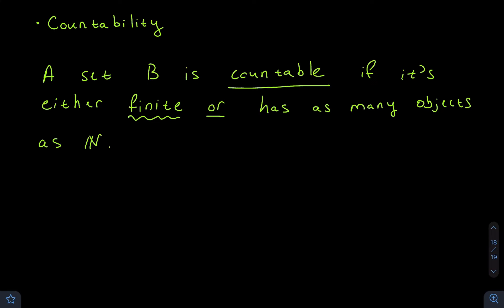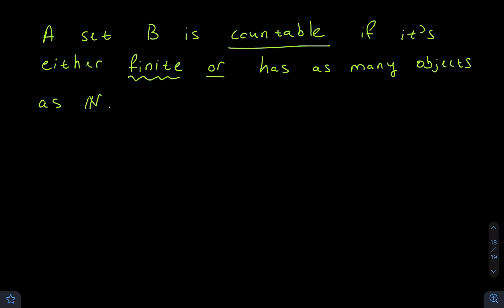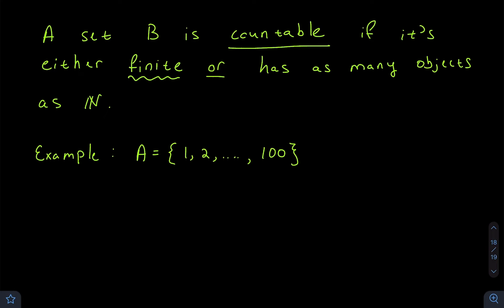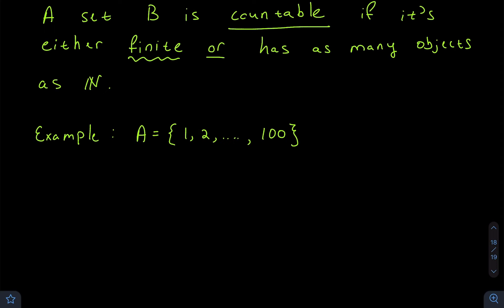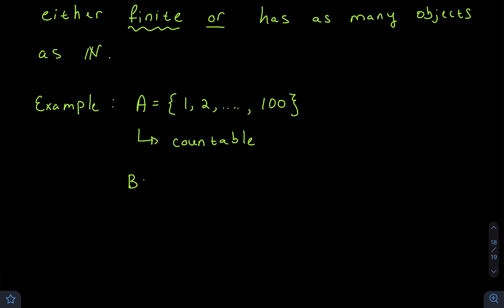So what does this mean? For example, the set A that has numbers from 1 to 100 is a finite set. It only has 100 objects inside of it, so it's countable.